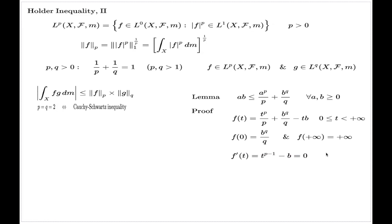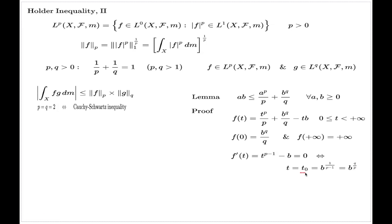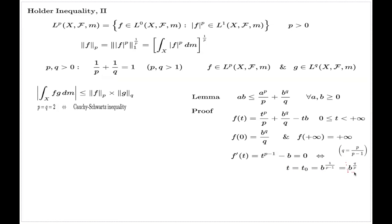We have to see where the derivative is zero — this is an easy thing. If you solve this, you will have that the derivative is zero at a special point which I denote t0, which is the p-th root of b. Given the relation between p and q, you can solve for q, and then replace accordingly.